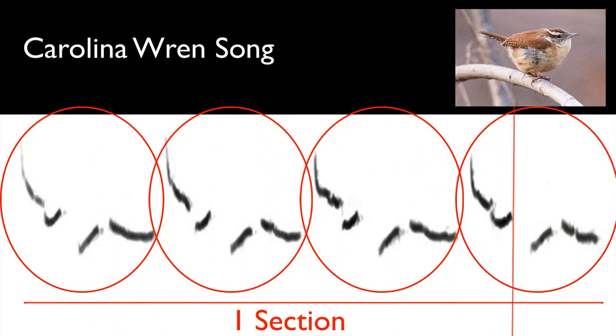Finally, the largest building block of a song is called a section. Sections are defined by a dramatic change in quality, structure, or pitch. For example, with the Carolina Wren song we just heard, it's actually just one section because it's just phrases repeated over and over with no major changes between them. An example of a song with two sections might be this Northern Cardinal song, which has several phrases and then a group of repeating elements.